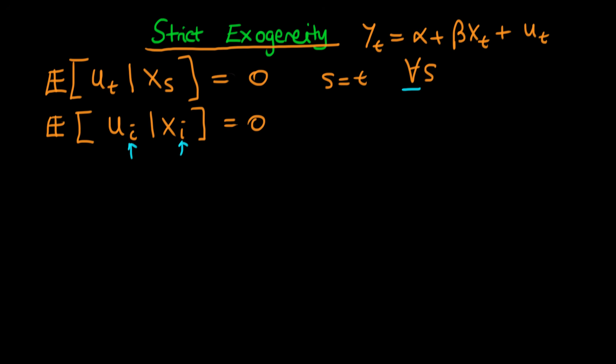I want to talk about two situations which can cause strict exogeneity to fail. The first is, let's say we have GDP at time t as being dependent on some monetary policy decision at time t. So we have y equals alpha plus delta times monetary policy at time t plus some error ut.